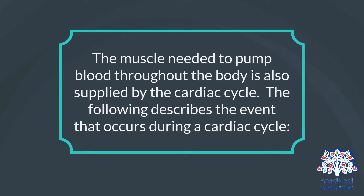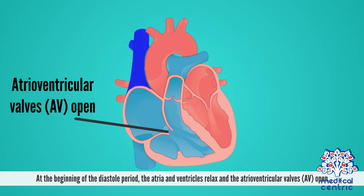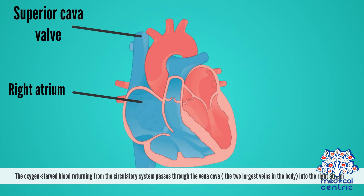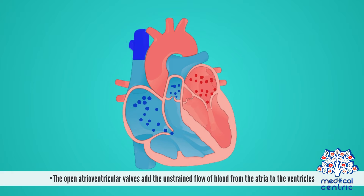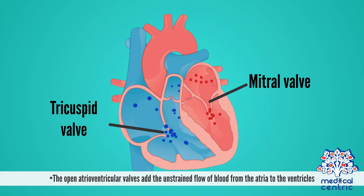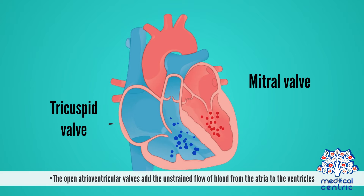The following describes the events that occur during a cardiac cycle. At the beginning of the diastole period, the atria and ventricles relax and the atrioventricular valves, or AV valves, open. The oxygen-starved blood returning from the circulatory system passes through the pulmonary veins and fills the left atrium. The open atrioventricular valves aid the unrestrained flow of blood from the atria to the ventricles.